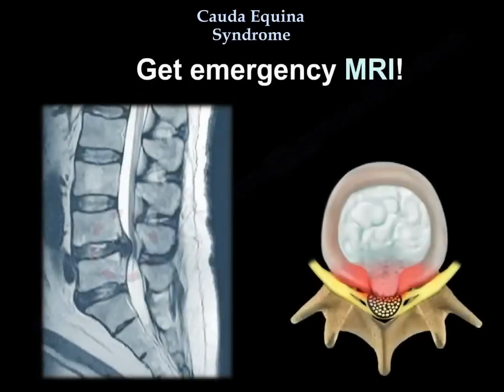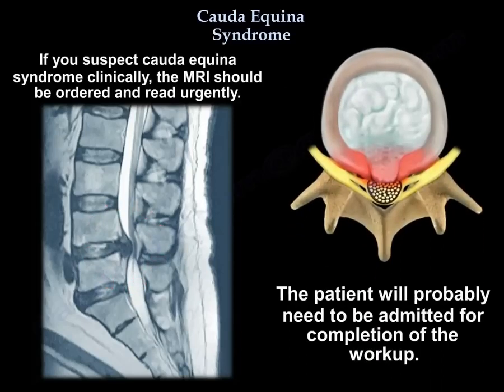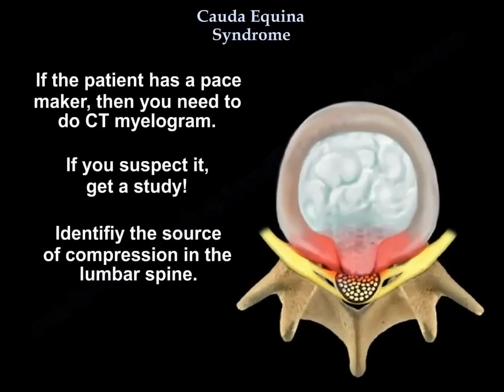Get an emergency MRI. If you suspect Cauda Equina syndrome clinically, the MRI should be ordered and read urgently, and the patient will probably need to be admitted for completion of the workup. If the patient has a pacemaker, you need to do a CT myelogram. If you suspect it, you get a study. Identify the source of compression in the lumbar spine.